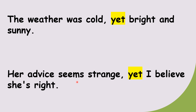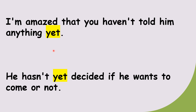Can you see how I am using different conjunction words? 'I am amazed that you haven't told him anything yet' — the meaning here is: 'I am amazed that you haven't told him anything till this time.' That's the meaning of 'yet' here. 'I didn't have my breakfast yet' — till this time I didn't have my breakfast. Clear now? 'He hasn't yet decided if he wants to come or not' — till this time he has not decided.